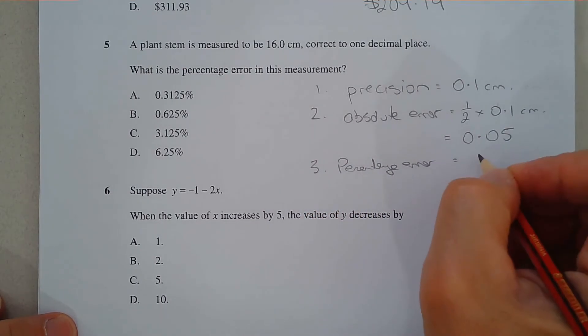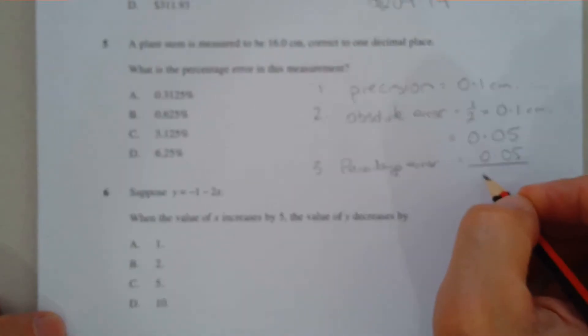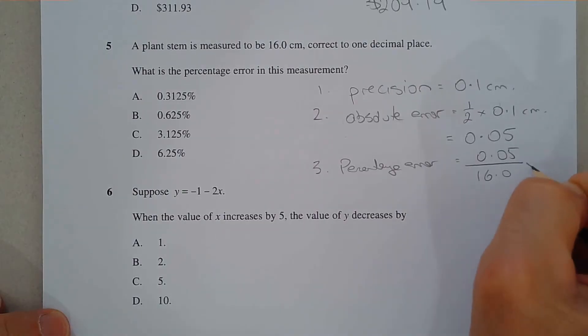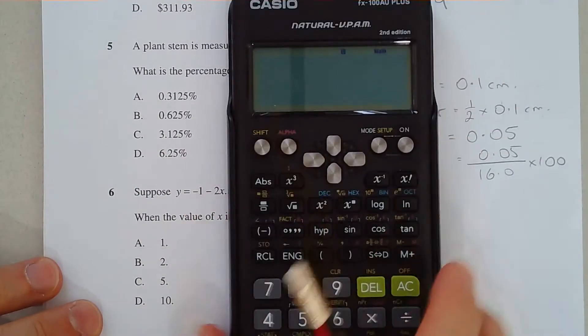Is equal to the absolute error, 0.05, over the measurement itself, which is 16.0. And we multiply that by 100 to turn that into a percentage. So let's do that.